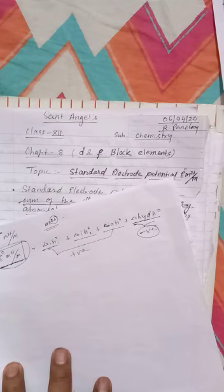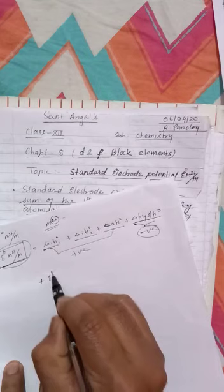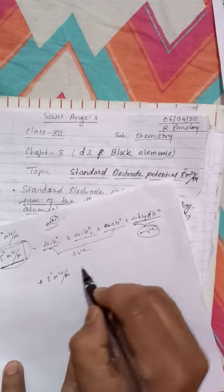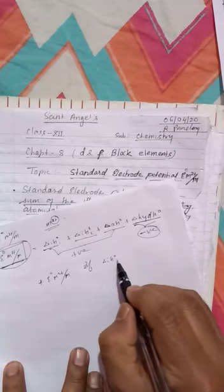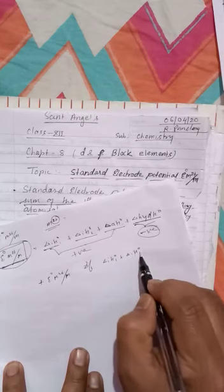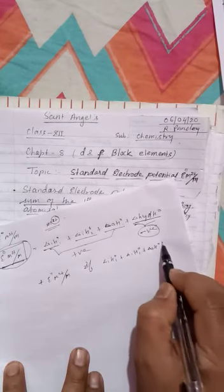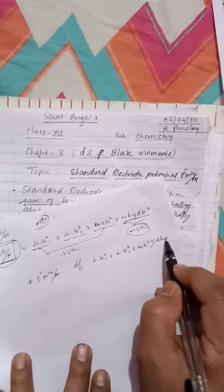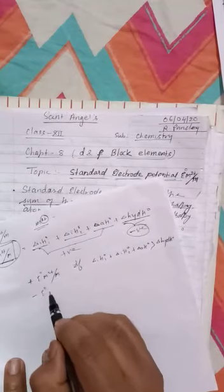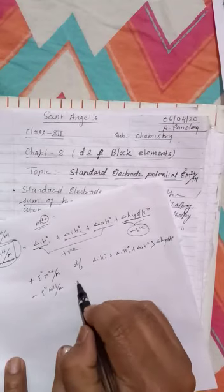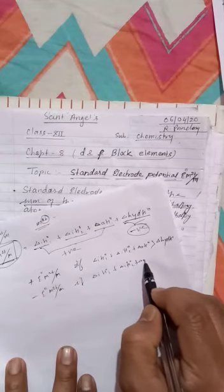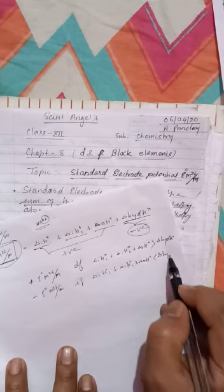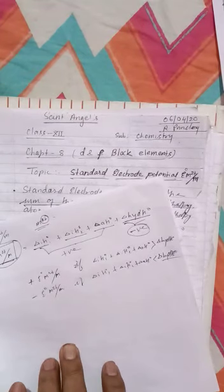And if the hydration enthalpy is less negative and the sum of ionization and atomization enthalpies is more positive, then the E° value will be positive. So: positive E°(M²⁺/M) occurs when ΔᵢH°₁ + ΔᵢH°₂ + ΔₐH° is greater than ΔhydrationH°. And negative E°(M²⁺/M) occurs when ΔᵢH°₁ + ΔᵢH°₂ + ΔₐH° is less than ΔhydrationH°.